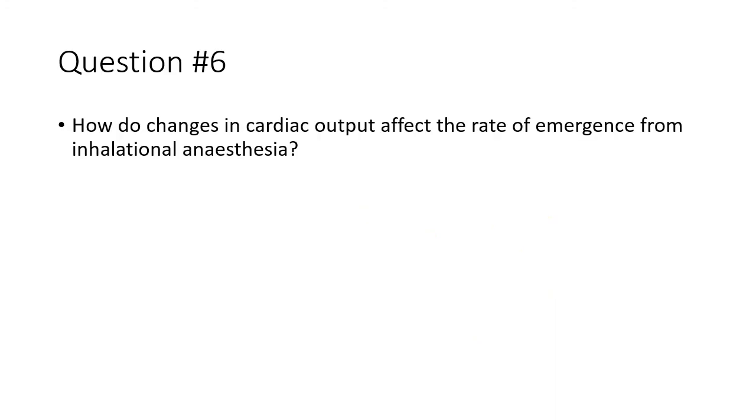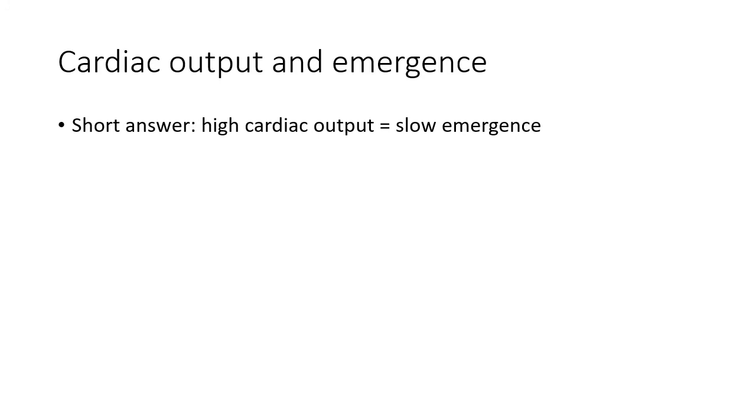Let's change tack again. We saw earlier on that high cardiac output results in slower onset of inhalational anesthesia, but what effect does high cardiac output have on the rate of emergence from inhalational anesthesia? Shouldn't it make it faster? Well, the answer is not what you would think it is. Turns out that high cardiac output results in slower emergence and slower washout.